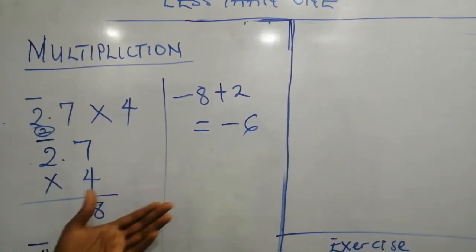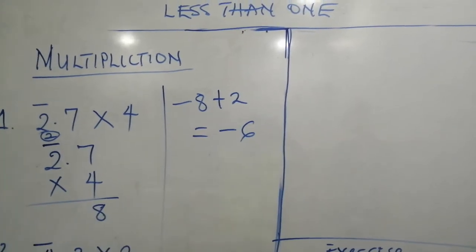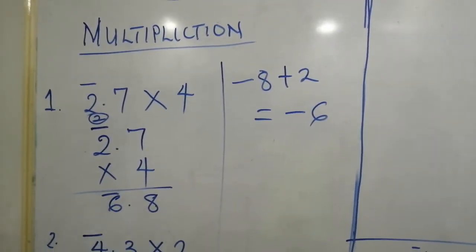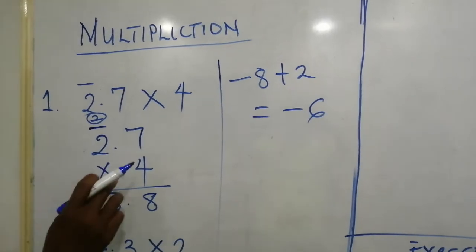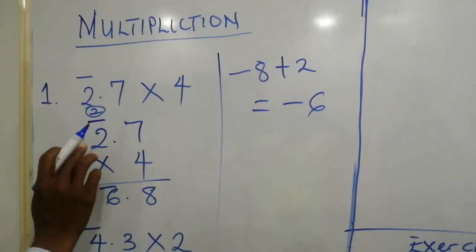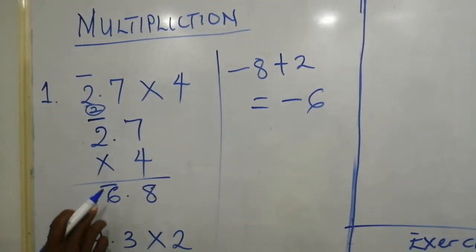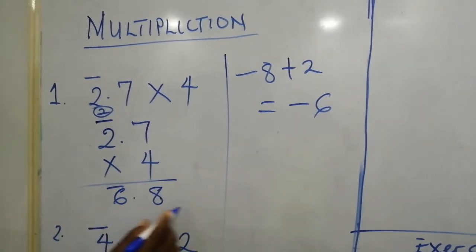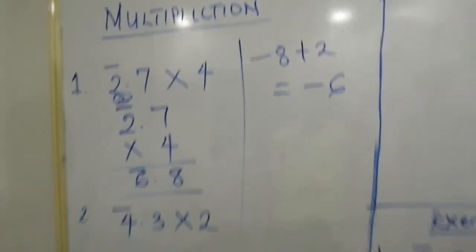So, 4 to be multiplied by bar 2.7 will give us bar 6.8. Let's see the second example.